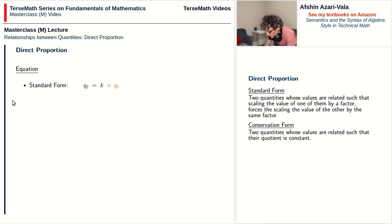Now we have the second form, which is the conservation form. This form says that we have two quantities whose values are related such that their quotient is constant. If you divide them, you always get the same number coming out. Doesn't matter how they change—when you divide them, you always get the same value. And that should make sense, because if there are two quantities and let's say they both double, their division—their quotient—remains fixed.